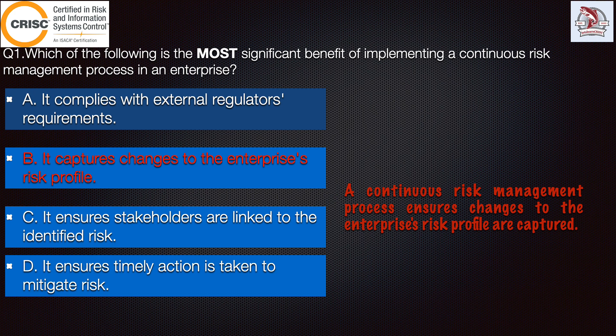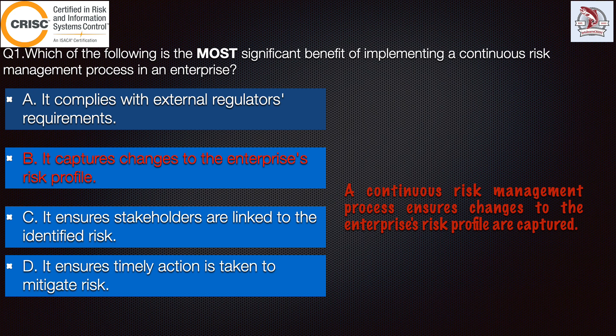Option C states: it ensures stakeholders are linked to the identified risk. This option is also incorrect because linking stakeholders to identified risk is not the aim. Option D states: it ensures timely action is taken to mitigate risk. This is also incorrect. In both cases, the aim of an ongoing risk management process is to accurately identify changes to the enterprise risk profile. That's why Option B is correct.